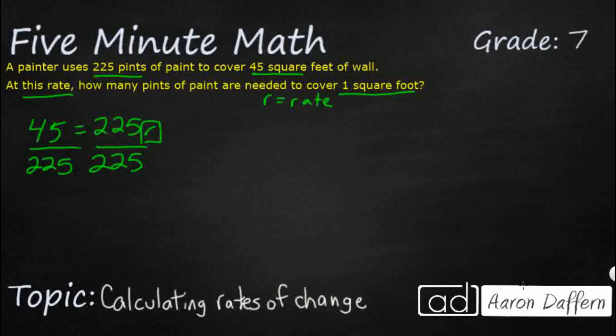And as you can tell, if we're going to multiply 225 by something to get to 45, that's going to be something that is less than one. It's going to be a fraction. So those two are going to cancel out. And so really, it looks like we've got 45 over 225. That's going to equal r.